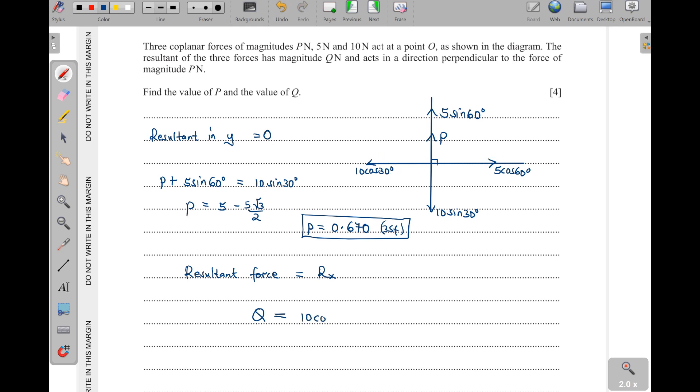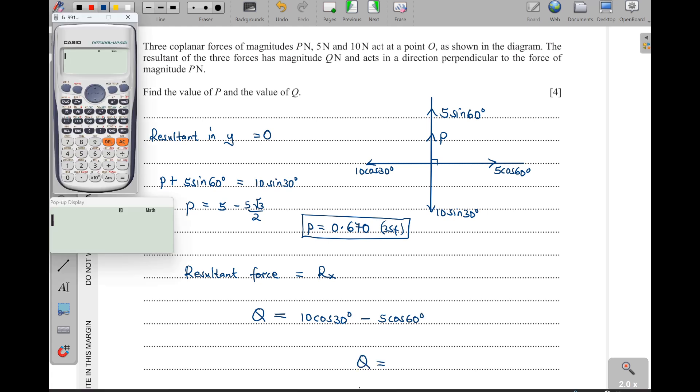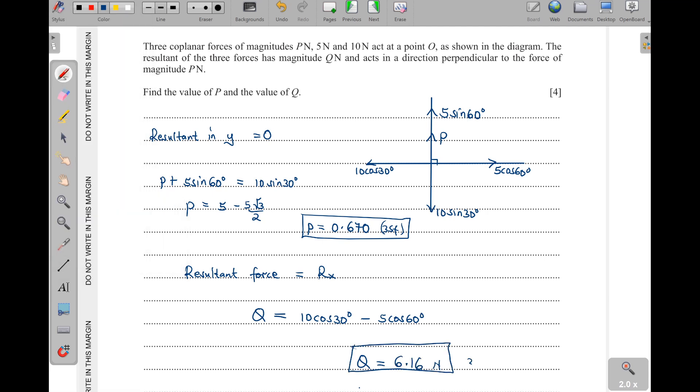That one will be equal to 10 cosine of 30 minus 5 cosine of 60. So what is Q here? 10 cosine of 30 we have seen that is the same as 5 root 3, then we can subtract 2.5, and that one will give us 6.16 to 3 significant figures.